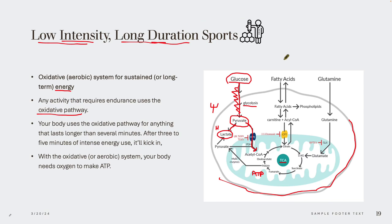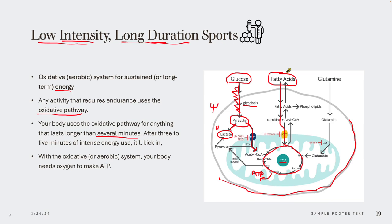Fatty acids work the same way. Fat can come from around our stomach or from fat already inside the muscle cell. Fatty acids enter the muscle cell, enter the mitochondria, and undergo processing through the citric acid cycle — ultimately making a lot of ATP. This is aerobic energy production using the oxidative pathway, primarily when exercising for several minutes or longer. Glucose and fatty acids create ATP so we can continue to exercise for a longer period of time.